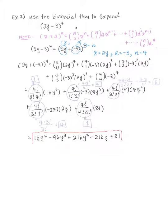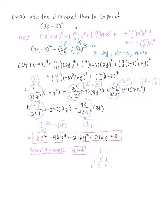Let me show you how to do this using Pascal's Triangle. Our n is 4, so look at the last row: 1, 4, 6, 4, 1. Notice these are exactly the coefficients in our expansion — 1, 4, 6, 4, 1. That's how Pascal's Triangle can be used.